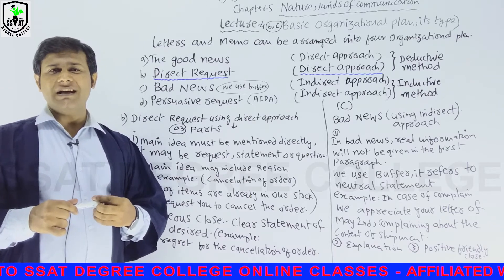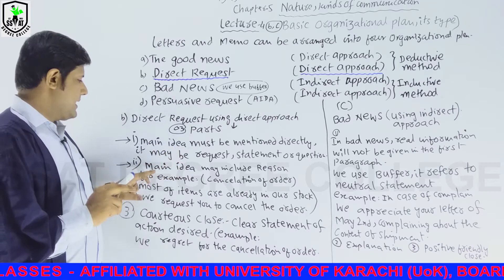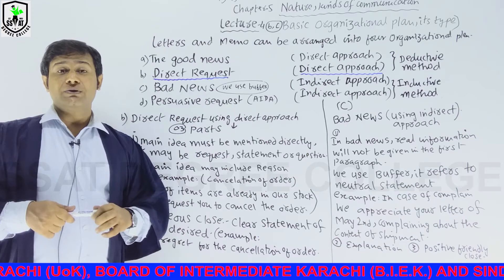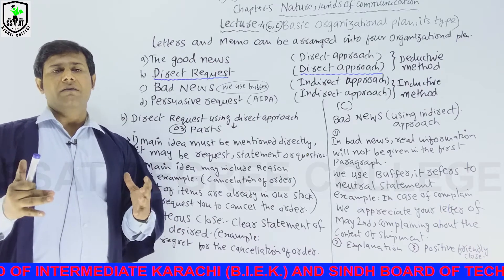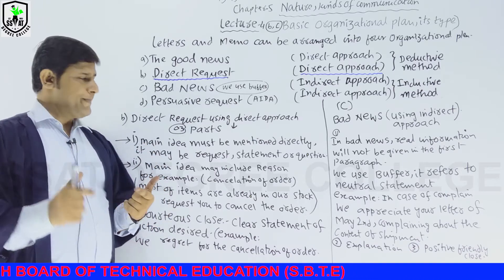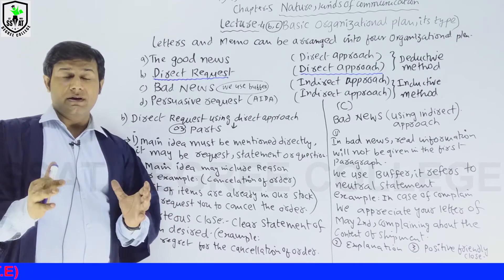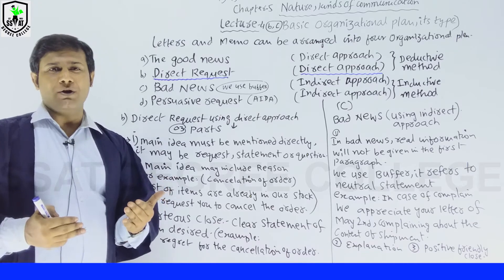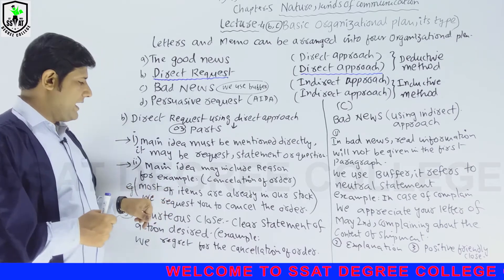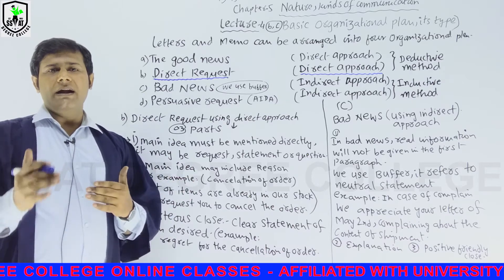First impression is the last impression. Part B has three components. Number one: main idea must be mentioned directly. Number two: main idea may include reason. For example, in a cancellation of order letter, we write clearly in the second paragraph: 'Most of the items are already in our stock, so we request you to cancel the order.' This is stated in a proper conversational tone.